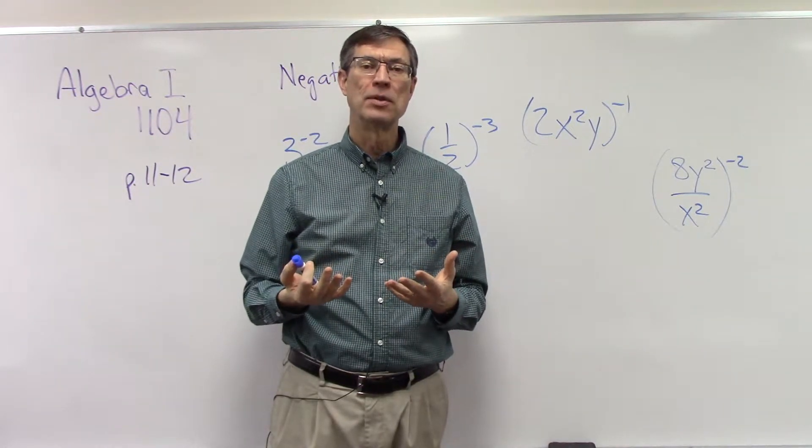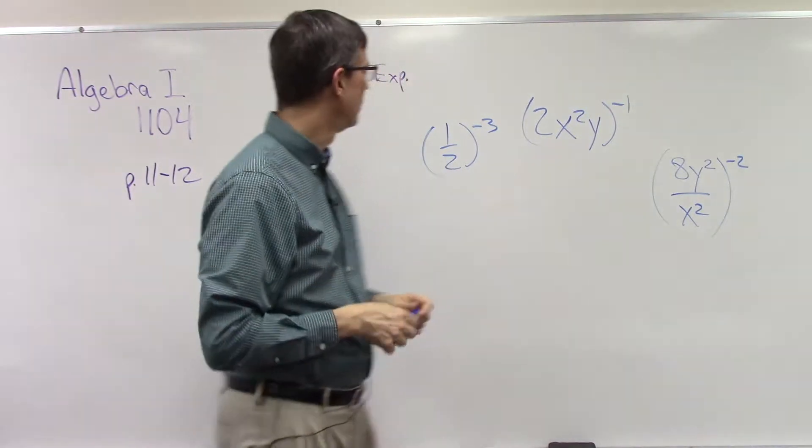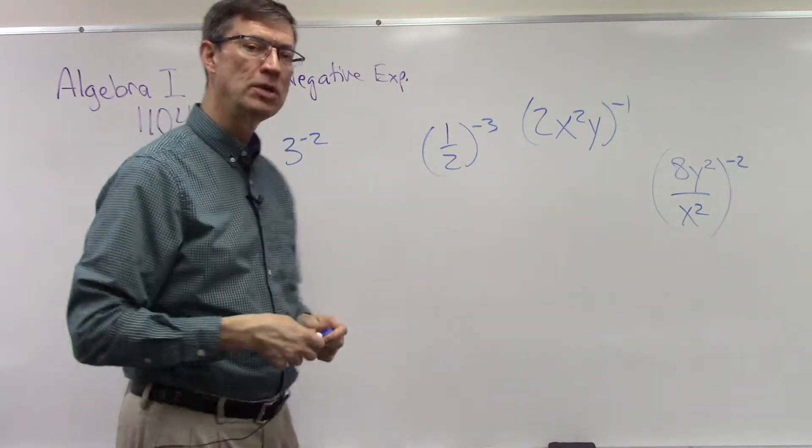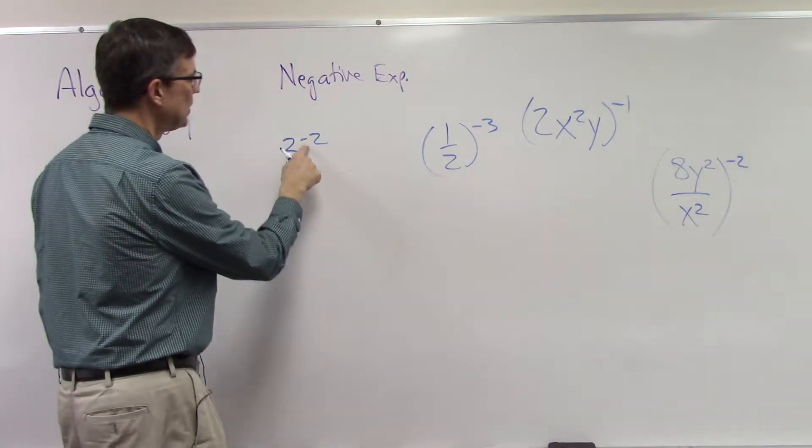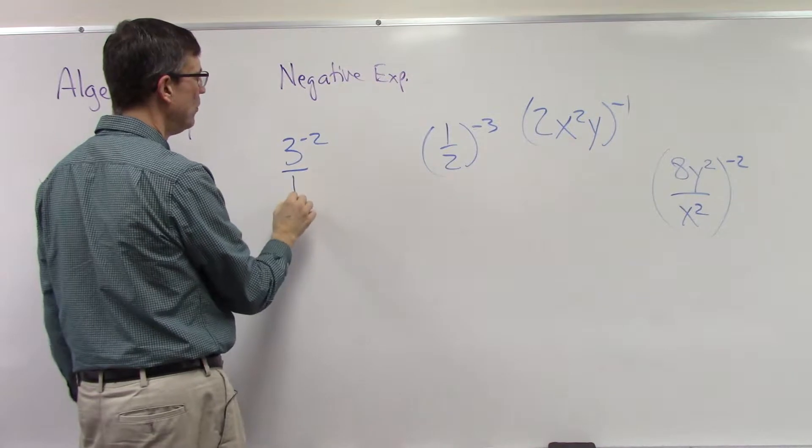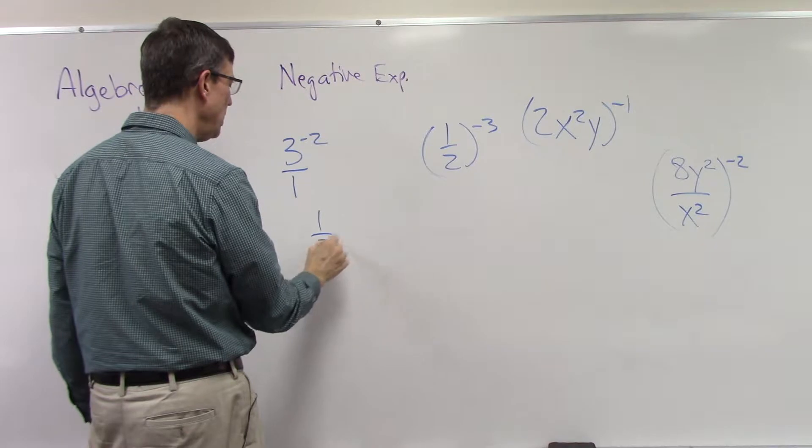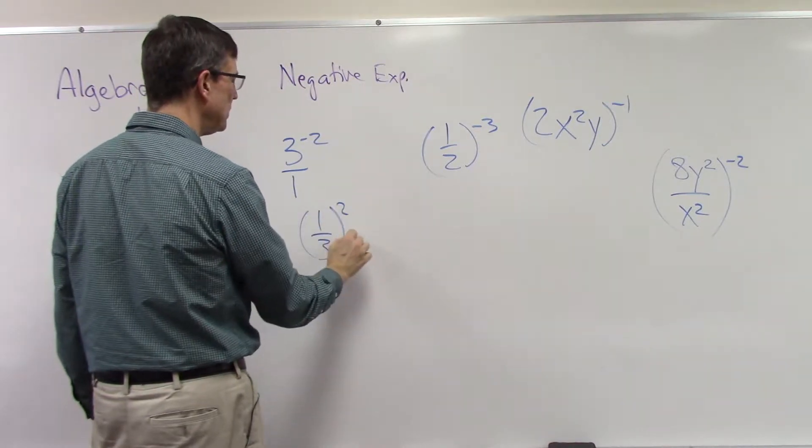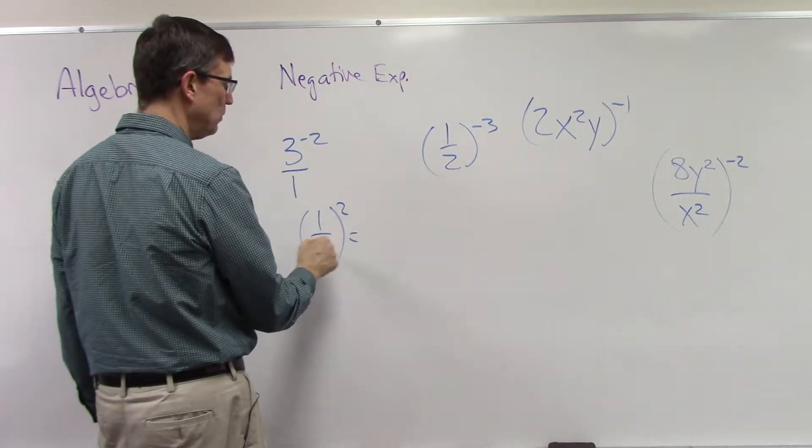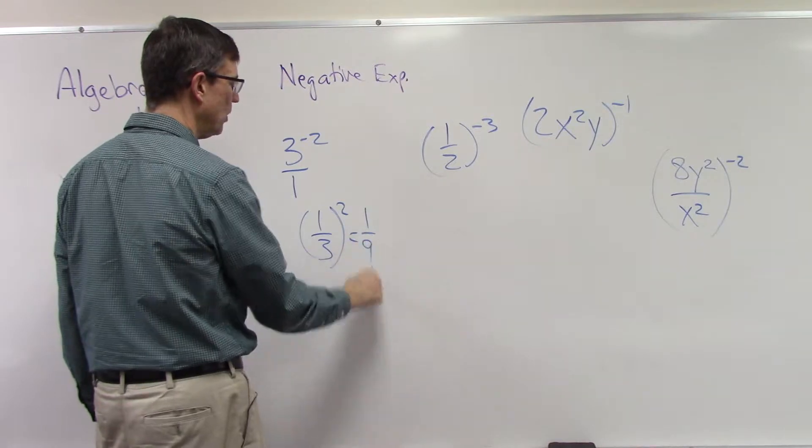Let me take an illustration here. 3 to the negative second power is like saying 3 over 1. Then I flip it upside down, it would become 1/3 to the second power, and now I just multiply and get 1/9.